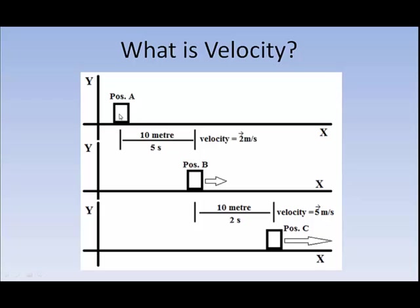Here is a simple example. This is a box, currently at position A. After 5 seconds, it moves forward to position B. The distance is 10 meters. But how did we measure this distance? We measured this distance with respect to this XY axis frame of reference. If we do not have this frame of reference, we won't be able to directly measure the distance.